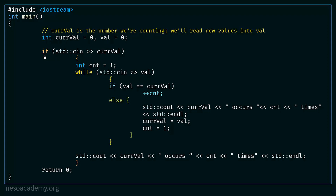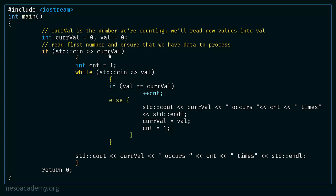We have an if statement that reads the first number and ensures we have data to process. We write cin inside this if statement and accept the value into curveval. This ensures there is valid input and it is not end-of-file or an invalid value. As long as there is input, the first number the user enters is stored inside curveval.